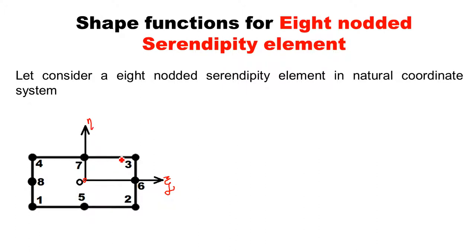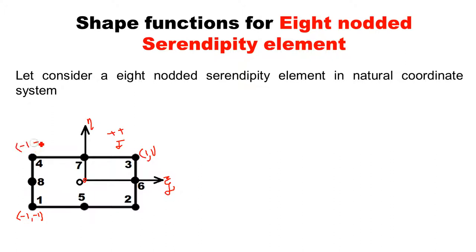Using this natural coordinate system, if you write down the coordinates of the 8 nodes — as we already discussed in previous problems — the first quadrant has plus-plus signs, so coordinates of node number 3 are (+1, +1). Node number 1 lies in the third quadrant, so its coordinates are (−1, −1). Node number 4 is in the second quadrant, so coordinates are (−1, +1). And node number 2 lies in the fourth quadrant, so its coordinates are (+1, −1).